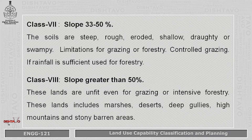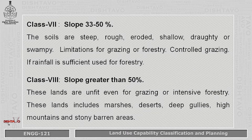Class 7 has a slope varying from 33 to 50 percent. These soils are very steep, rough, eroded, shallow, and droughty or swampy in nature. There are severe limitations for grazing or forestry. Controlled grazing can be possible if rainfall is sufficient, and it can also be used for forestry.